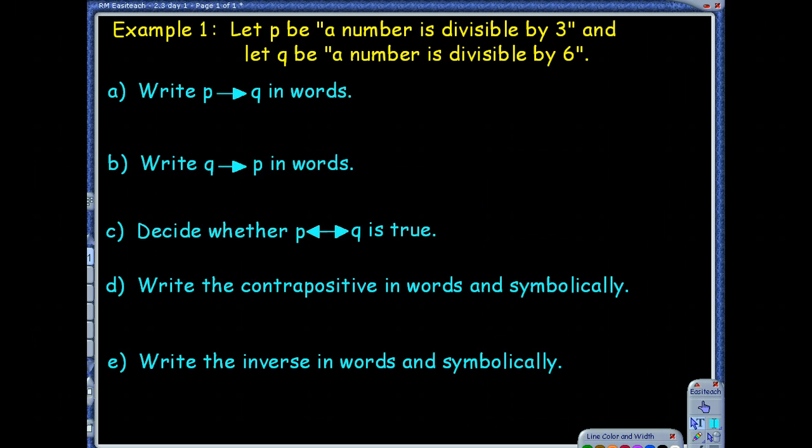What they're giving you is what P is, and now what does P represent? P is the hypothesis. So they're telling you that P is a number divisible by 3, and Q, meaning the conclusion, is a number divisible by 6.